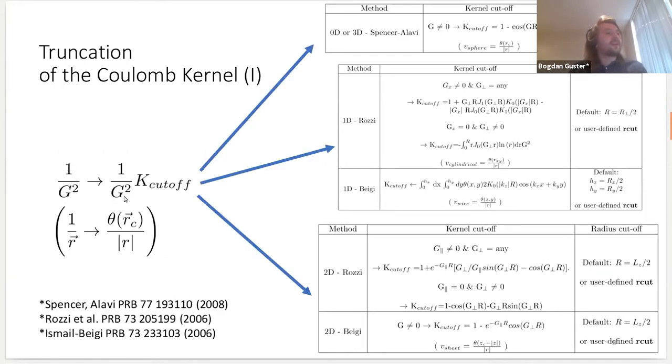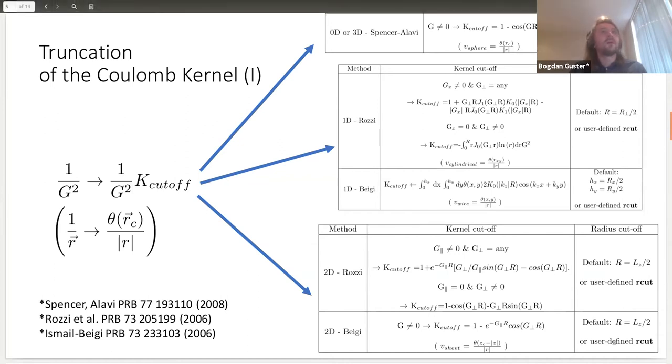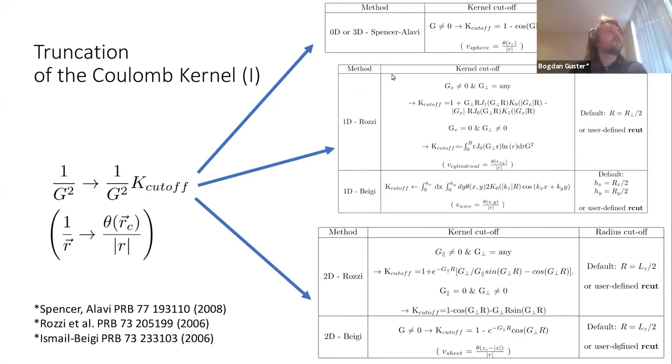What the truncation is about is a simple transformation of the Coulomb kernel present throughout density functional theory formalism into attaching basically a cutoff function that is different depending on the system.